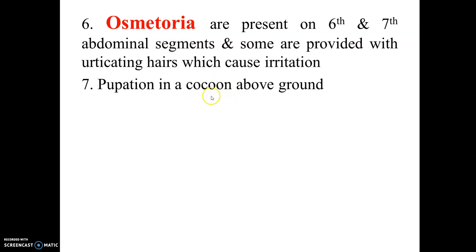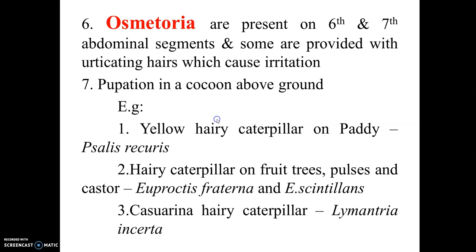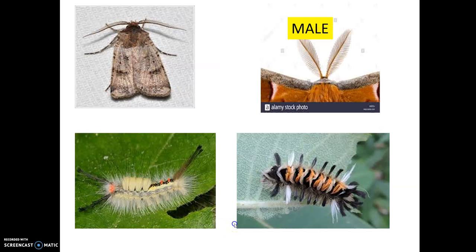Pupation takes place in a cocoon. Examples include yellow hairy caterpillar of paddy, hairy caterpillar of fruits, and casuarina hairy caterpillar. In the images, you can see the adult male of Lymantidae and the larvae, whose body consists of several setae or hair-like structures.